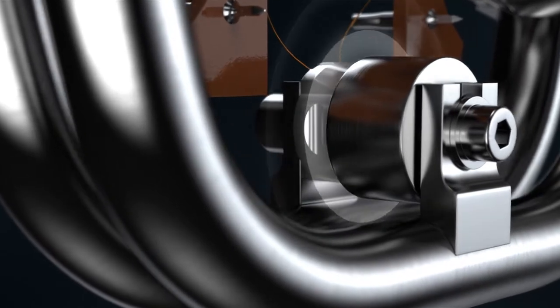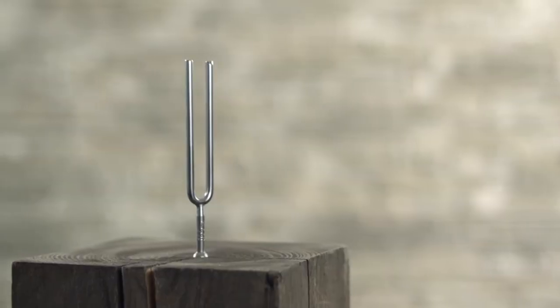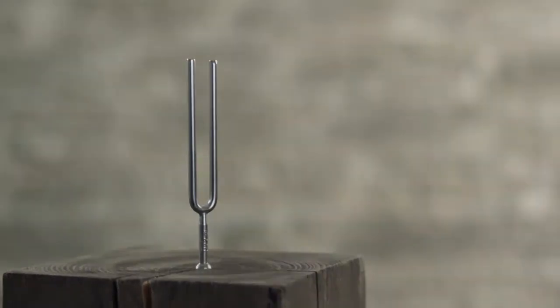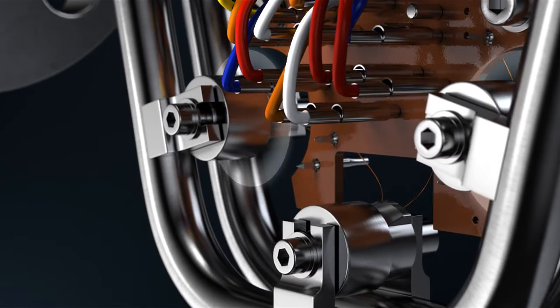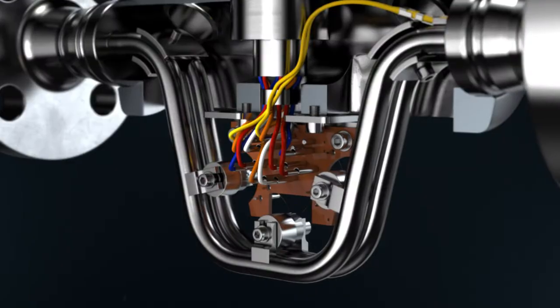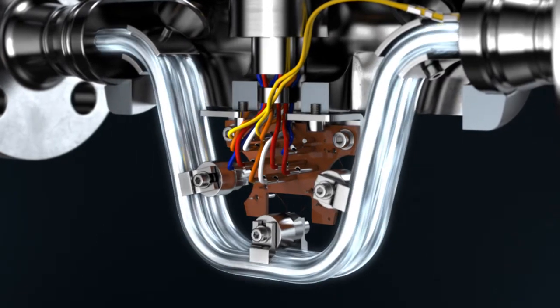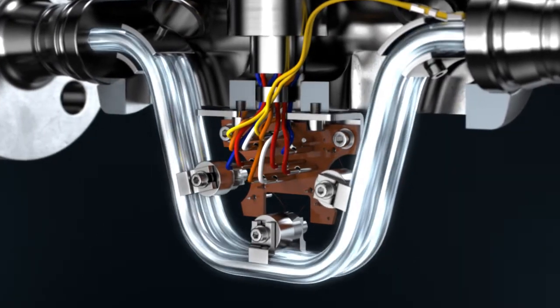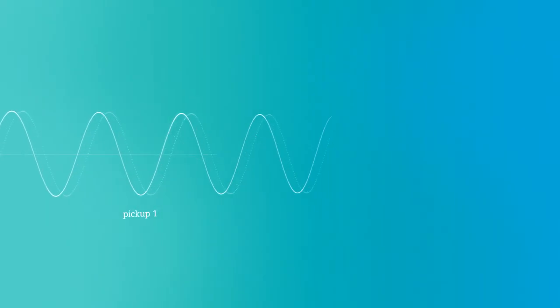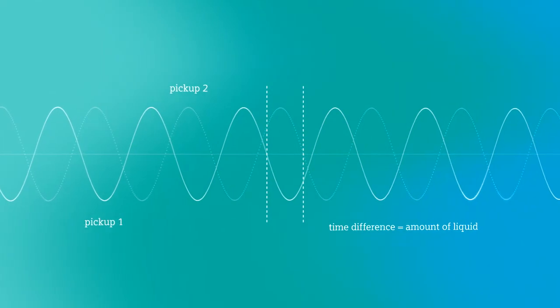The tubes oscillate with a resonance frequency, similar to a tuning fork. The oscillation is measured precisely by two pickups at the inlet and outlet sections. If liquids or gases now flow through the tubes, a phase shift occurs, as with a water hose. The pickups measure the spatial and temporal displacement.